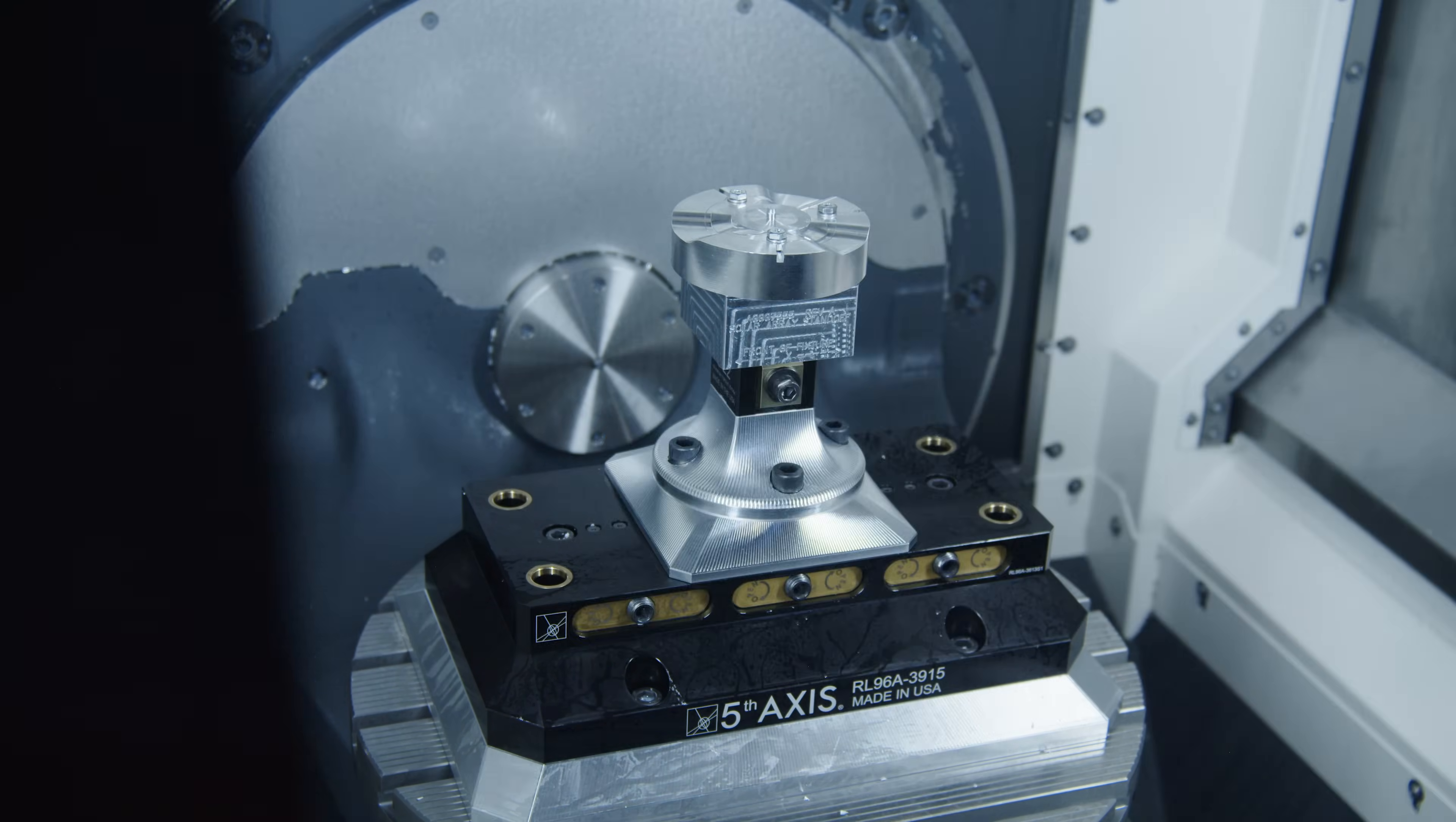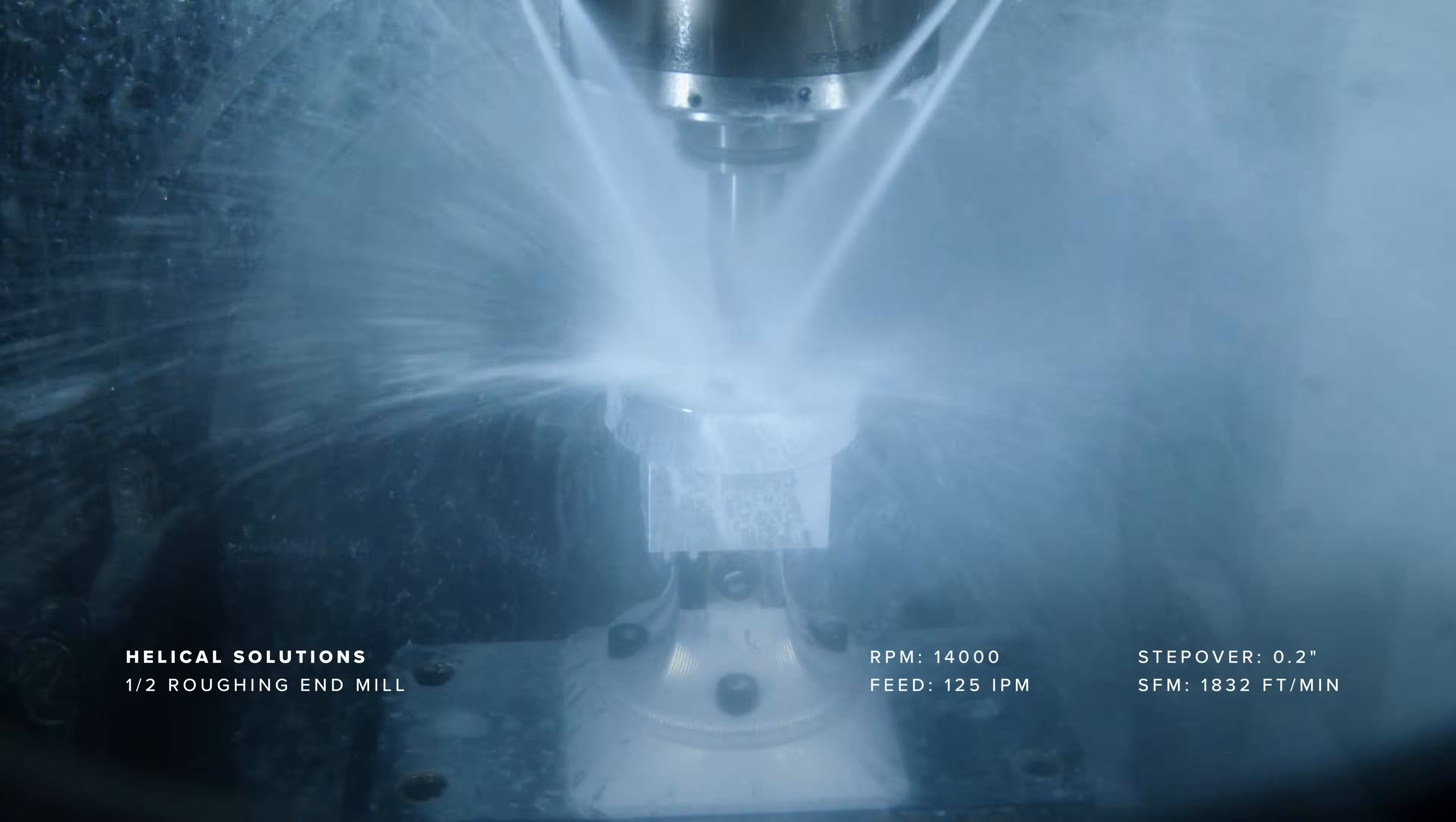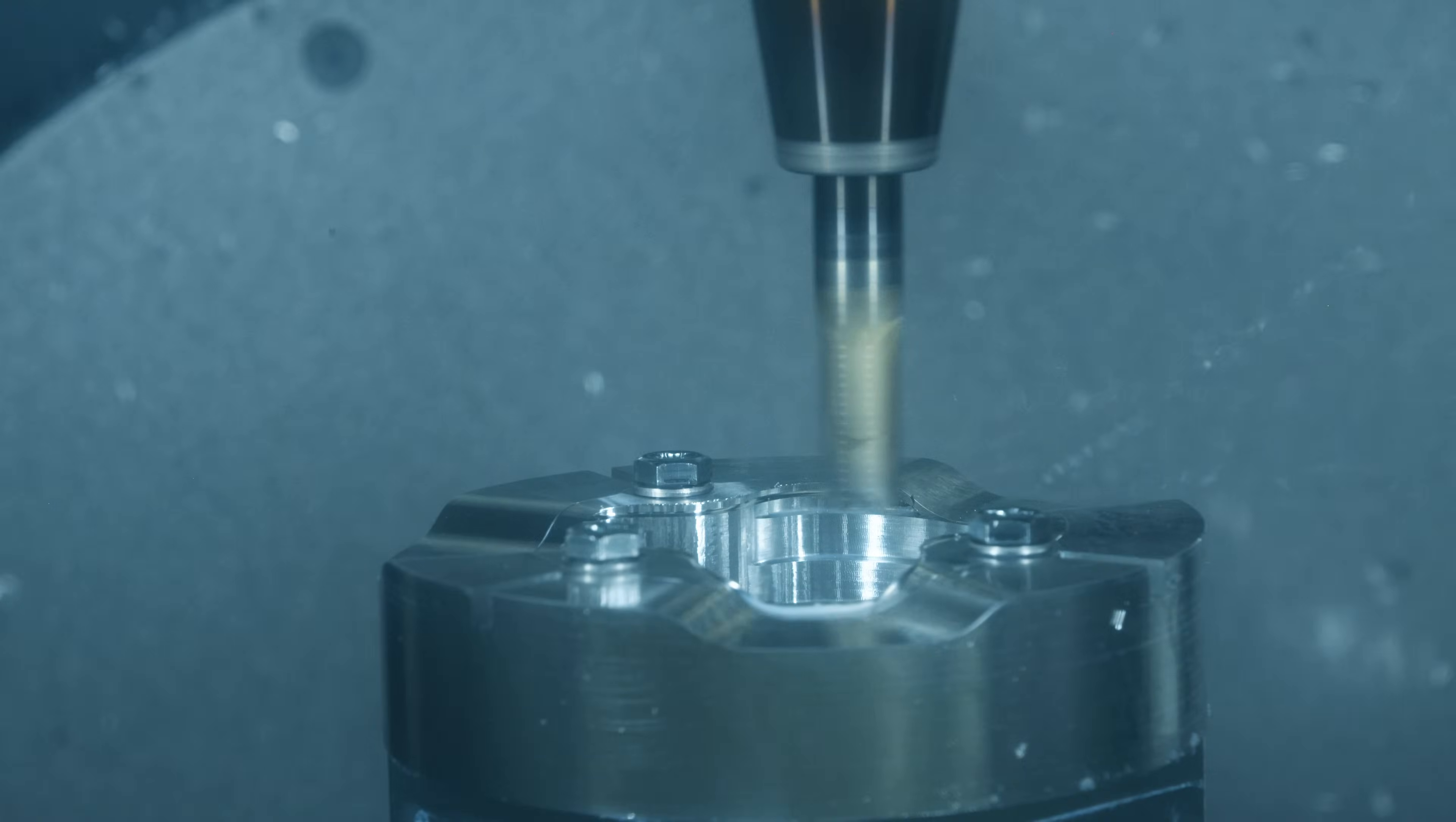With the part locked in we start cutting the inside. We go in with the same half inch helical chip breaker using an adaptive toolpath. We had to use some coolant here as ramping into a pocket has a high risk of gumming up the tool with aluminum, which could be an expensive mistake.